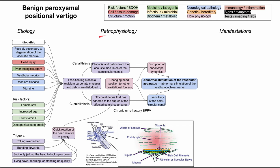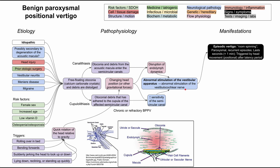Now let's talk about the manifestations — what actually happens with abnormal stimulation of the vestibulocochlear nerve. The most prominent symptom, as reflected in the name, is vertigo. This is episodic vertigo: patients report head spinning or room spinning, occurring in episodes that typically last seconds — usually less than one minute. These episodes are paroxysmal, coming on suddenly, and are positional because they're triggered by movements of the head, typically after a latency period.